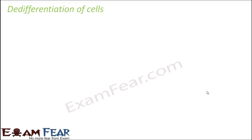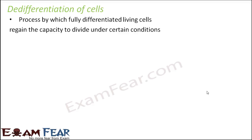Now there is another term called de-differentiation. With the term itself, it looks as if it is going to be more complex than differentiation because you have a 'de-' added to differentiation. It is a process by which fully differentiated living cells regain the capacity to divide under certain conditions. Sometimes it has been observed that some cells which have differentiated completely — so they are all mature cells, performing a specific function, having a permanent shape and size of their own — suddenly they again gain that capacity to divide. So they again start to divide, and that process is known as de-differentiation. The cells which have already differentiated are going to produce more cells. So the process is called de-differentiation — dividing on top of differentiation.